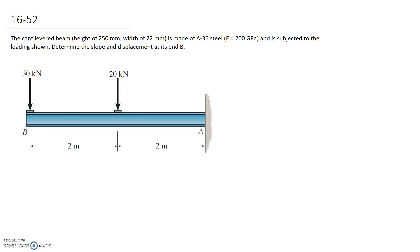The cantilevered beam with the dimensions given is made of A36 steel and is subjected to the loading shown. We're asked to determine the slope and displacement at its end B, at the end here.